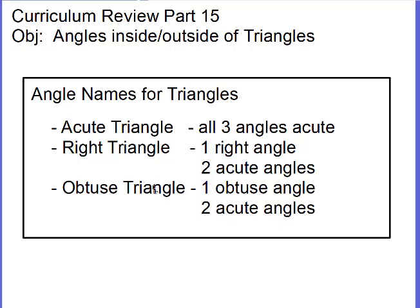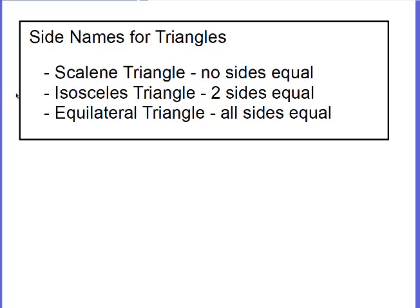We just have to remember what these angles mean. Acute means less than 90 degrees. A right angle means exactly 90 degrees. And an obtuse angle is an angle greater than 90 but less than 180 degrees. So those are our angle names. Now we have side names.